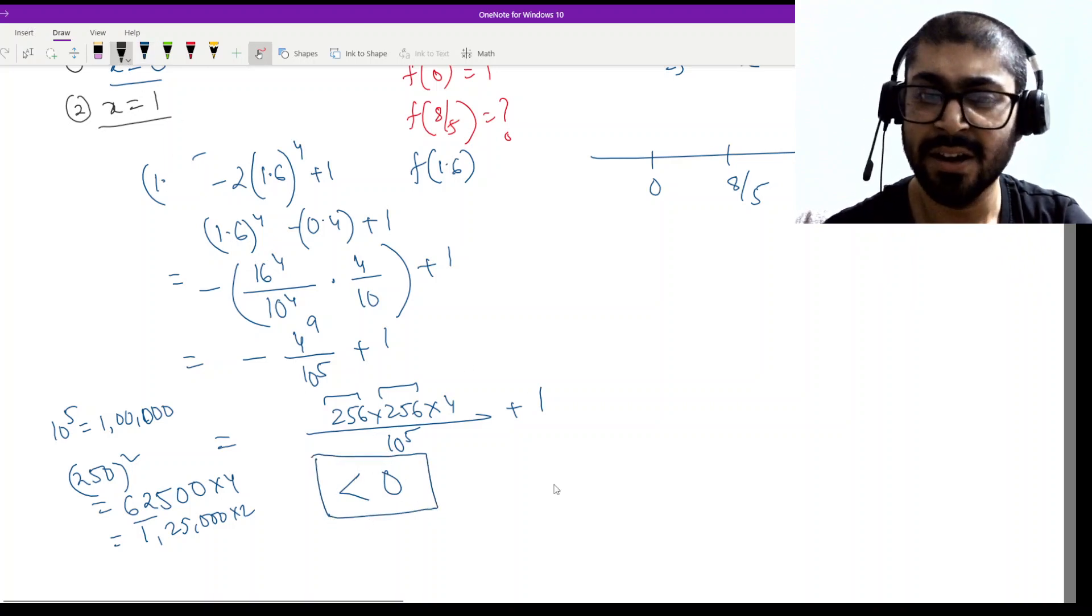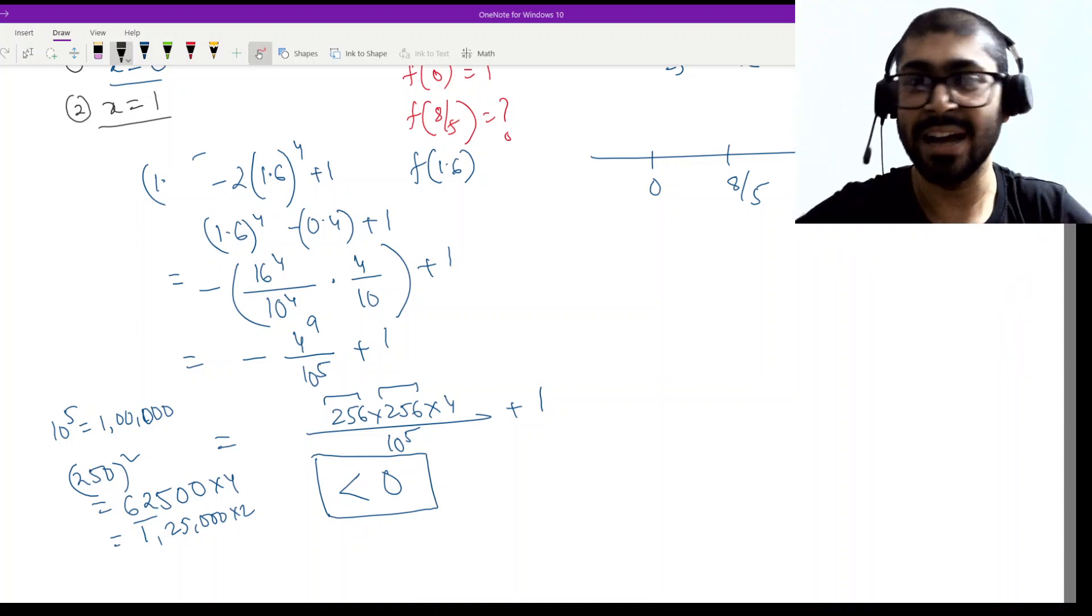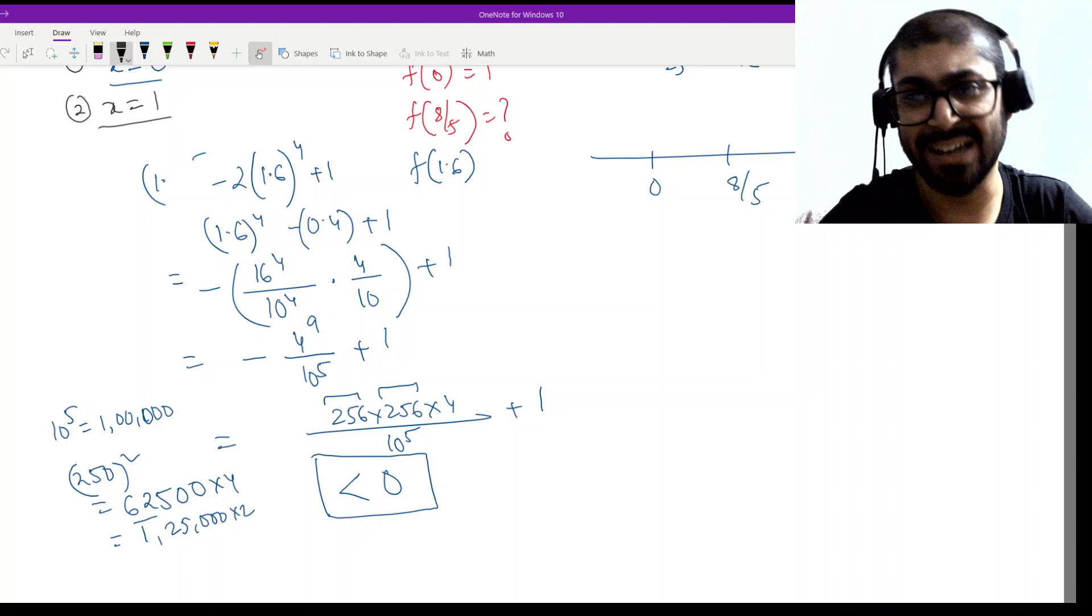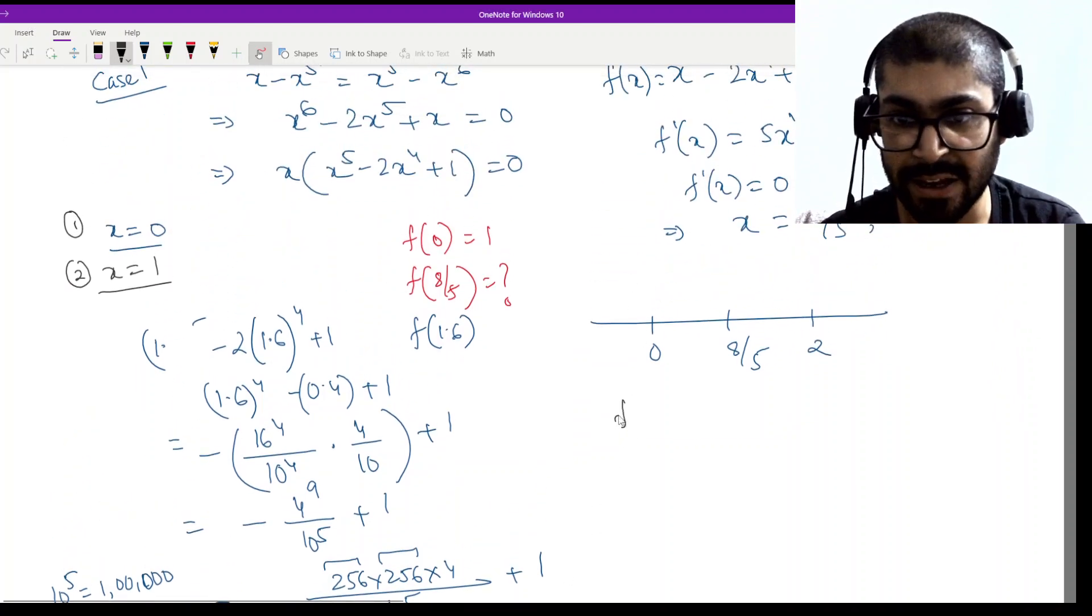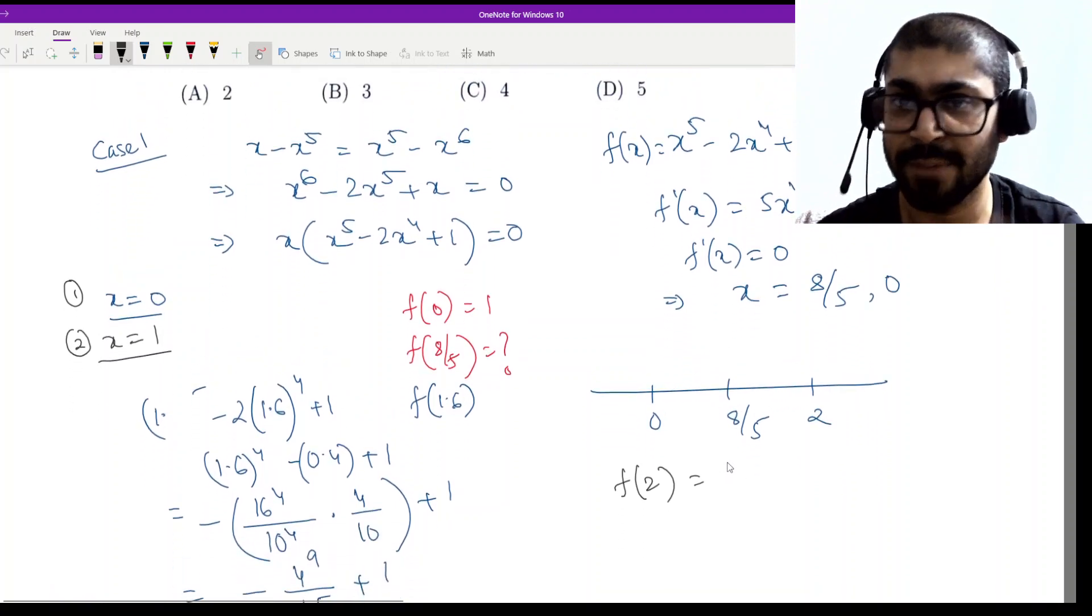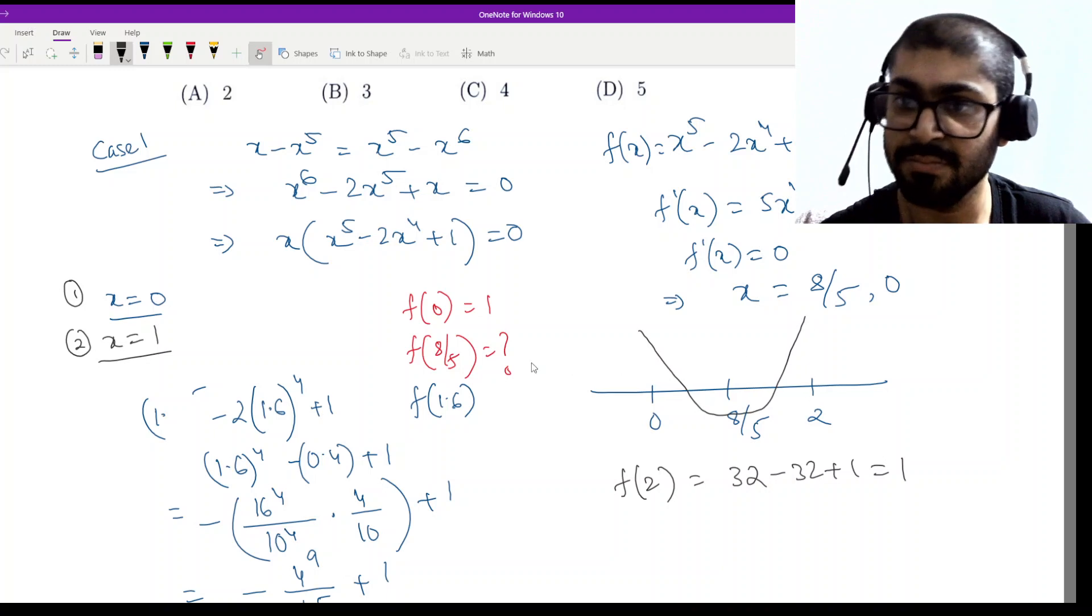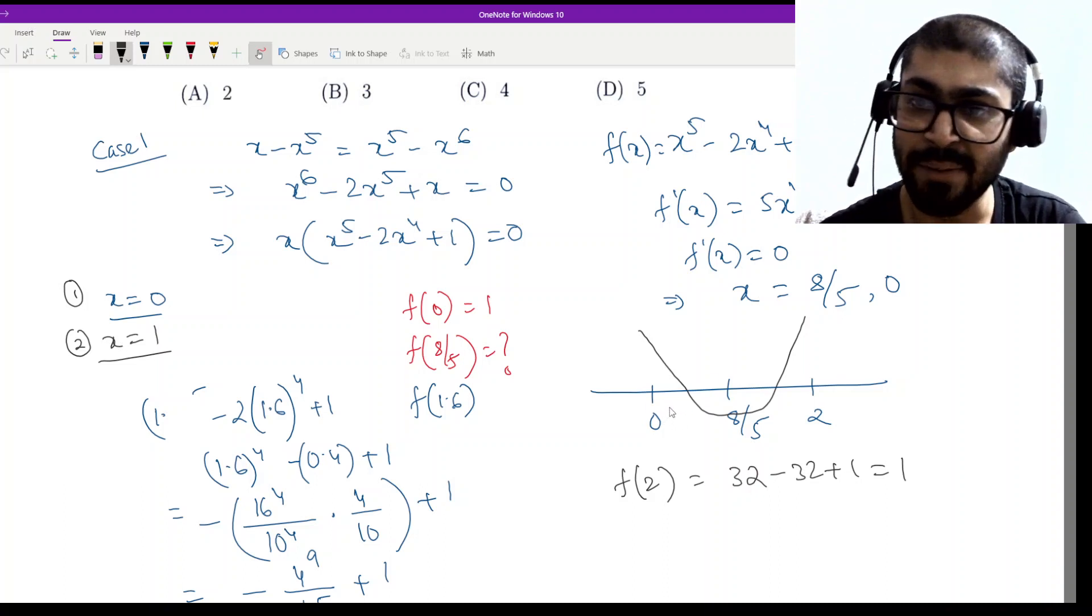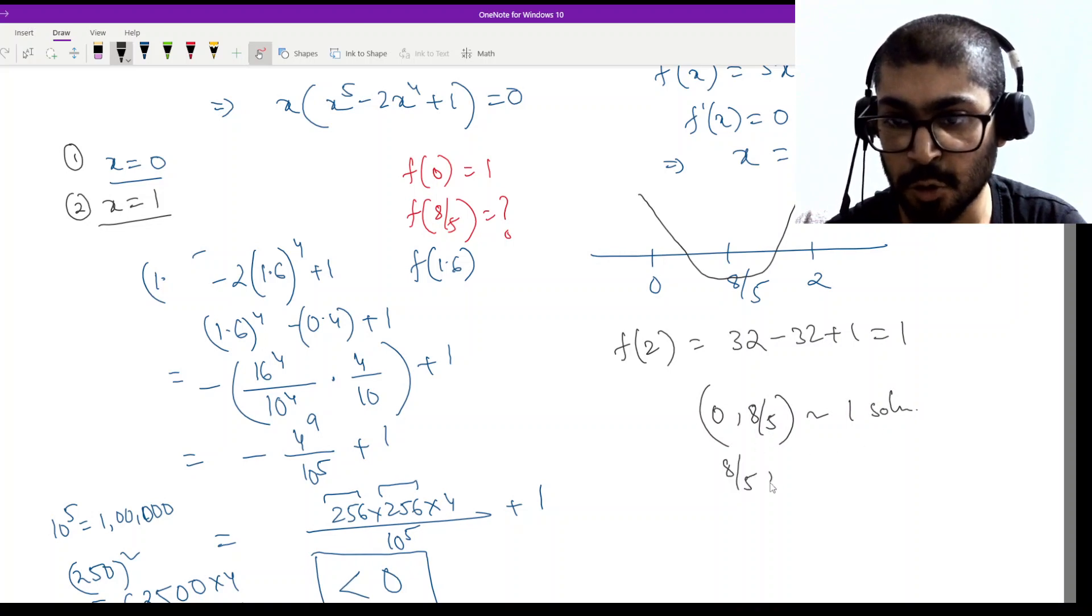If you didn't understand this part, rewind and watch again slowly. There are many different calculation techniques that will come to mind at that time - use whatever works. I just solved this in front of you because I had some idea, though I hadn't done the calculation beforehand. So this went negative. And at f(2) the value is 2 to the power 5 minus 2 into 2 to the power 4 plus 1, which is 32 minus 32 plus 1. This is actually positive. So at 0 it was positive, at 8 by 5 it's negative, and at 2 it's positive.